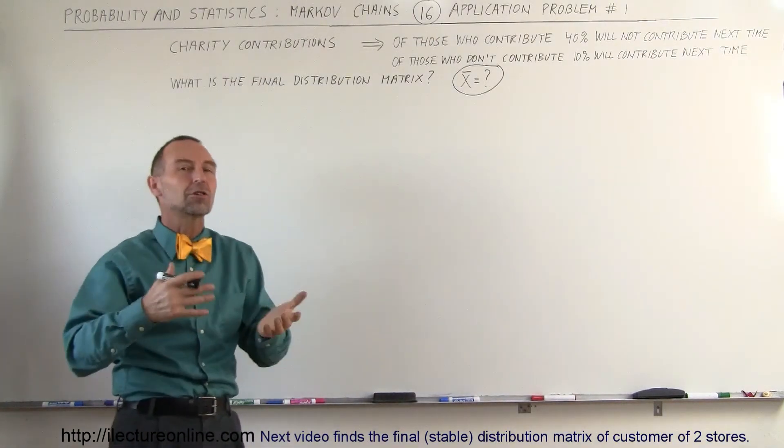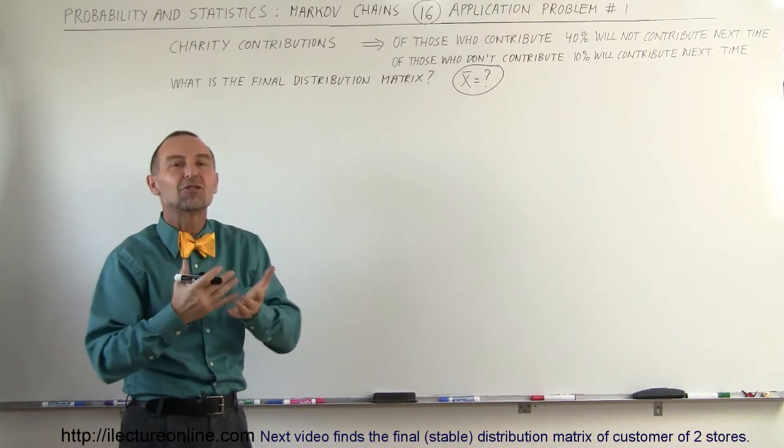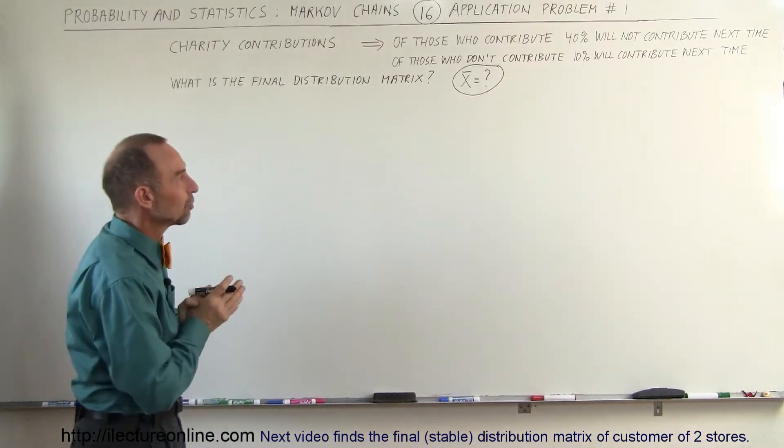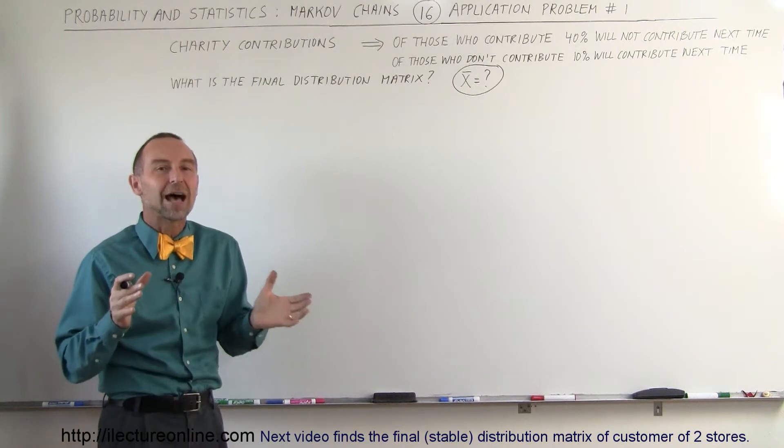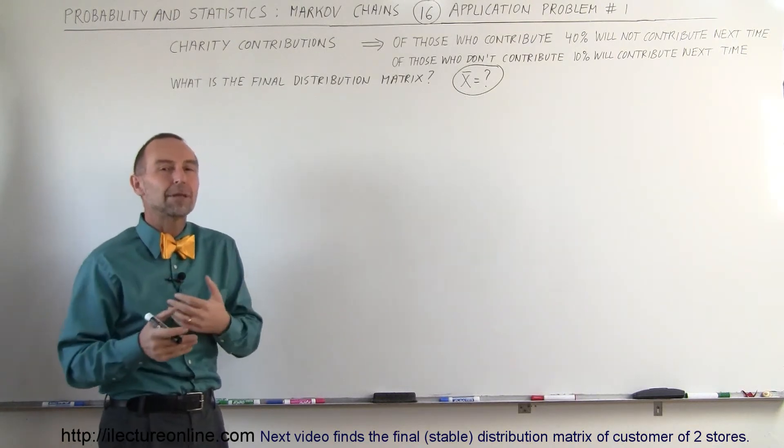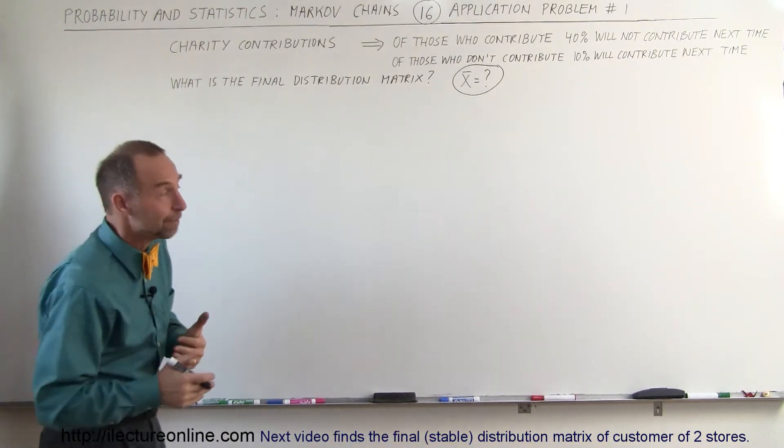So the question is, if this goes on for a long time, what will eventually be the stabilization or the stable distribution matrix? What will be the stable state? How many people will contribute and how many people will not contribute to this charity?